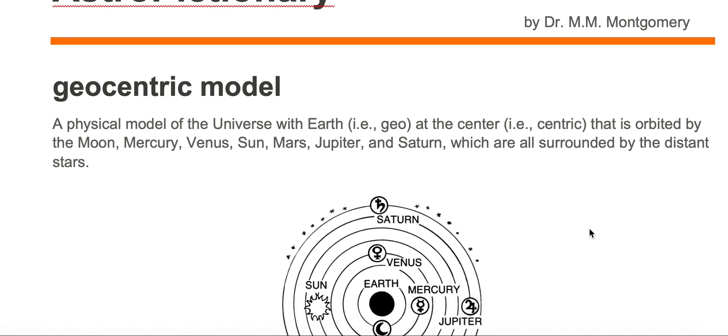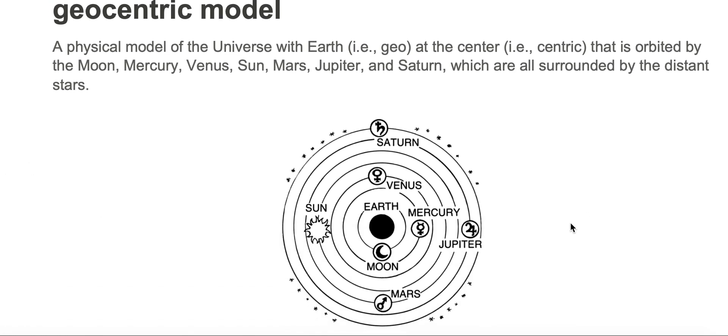Let's take a look at this geocentric model. Now geo means Earth. Centric means centered, so we have an Earth-centered model. And it's surrounded by the Moon,